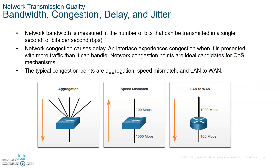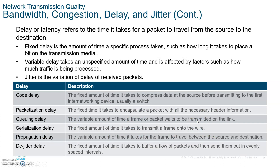Bandwidth congestion typically happens at the points of aggregation — at the switch going towards the default gateway. That's where the bottlenecking is. You can also have mismatched speeds: somebody transmitting at 1,000 megabits per second and receiving at 100. You've got to buffer it. Or LAN to WAN — a gigabit Ethernet going onto a 64-kilobit leased line. Bandwidth is the maximum amount of data that can be transmitted on the wire. Congestion means a high volume of data trying to get through.